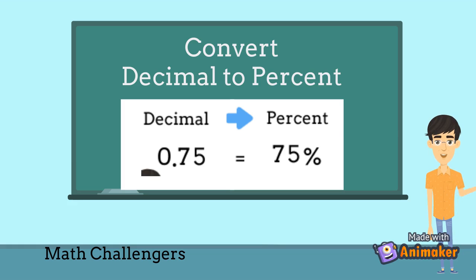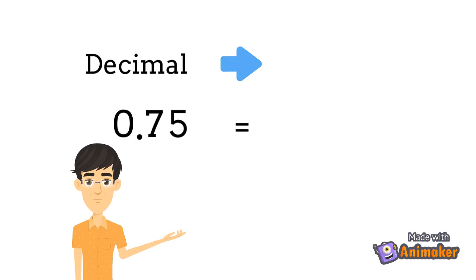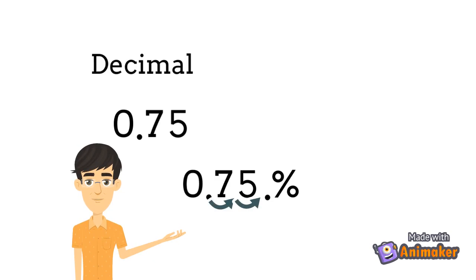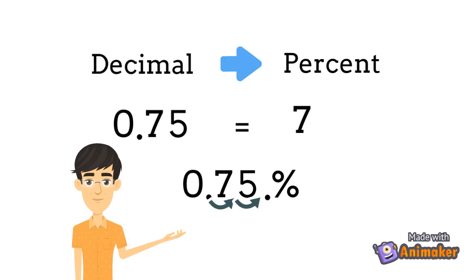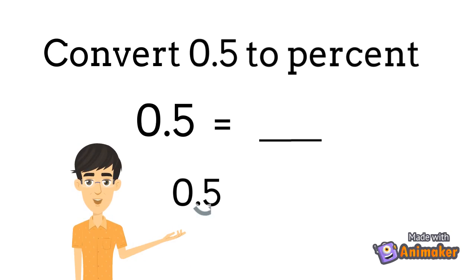Now let's have changing decimal to percent. To change decimal to percent, first move the decimal point 2 places to the right, then put the percent sign, and add zeros if needed. For example, change 0.75 to percent: move the decimal point 2 places to the right and put the percent symbol. The decimal 0.75 in percent is 75%. Similarly, to convert 0.5 to percent, move the decimal point 2 places to the right and add a zero if needed.